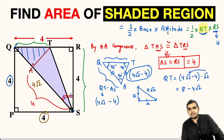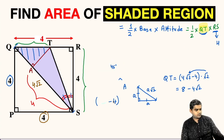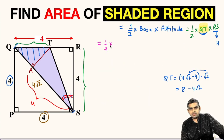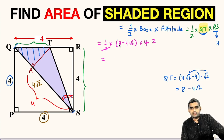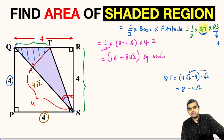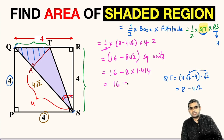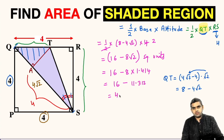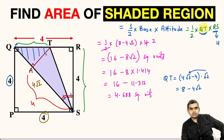We can now substitute to find the area: Area = ½ × QT × RS = ½ × (8 − 4√2) × 4 = 2 × (8 − 4√2) = 16 − 8√2 square units. In decimals: 16 − 8 × 1.414 = 16 − 11.312 = 4.688 square units, approximately 4.7 square units.